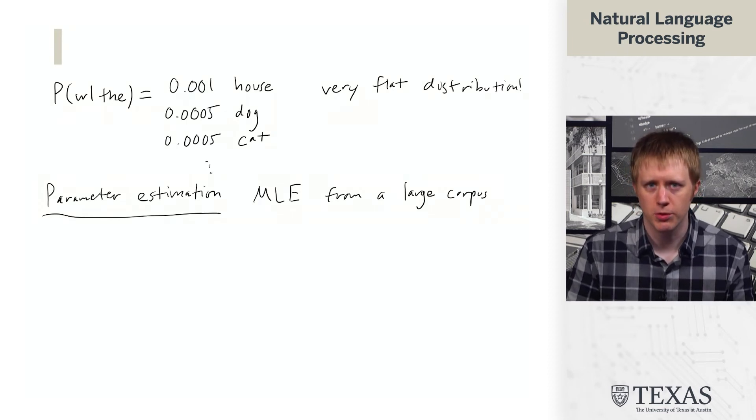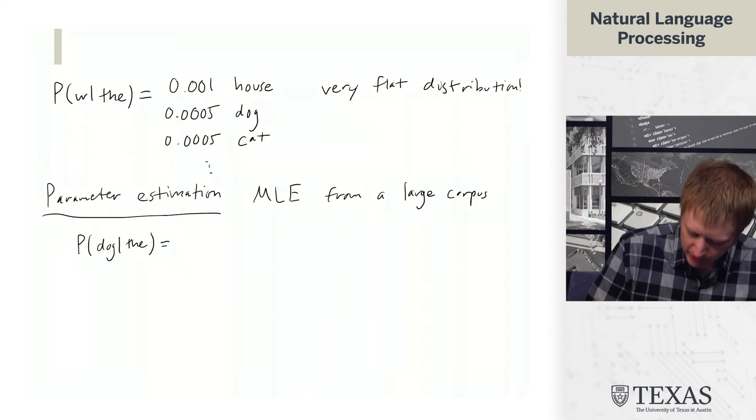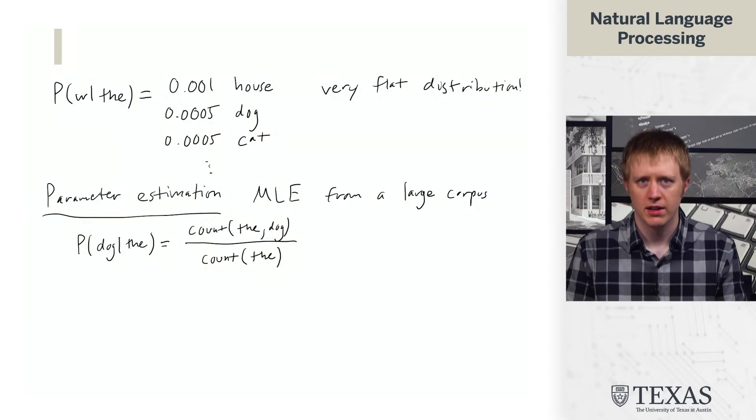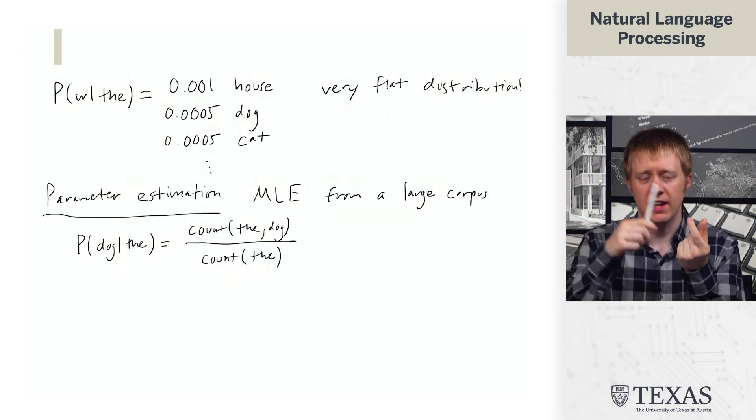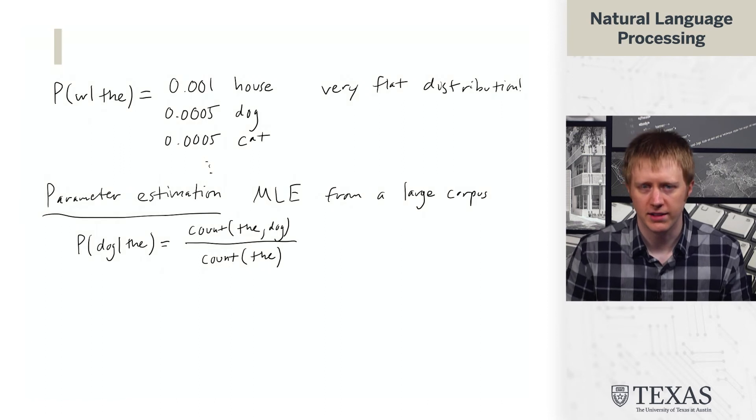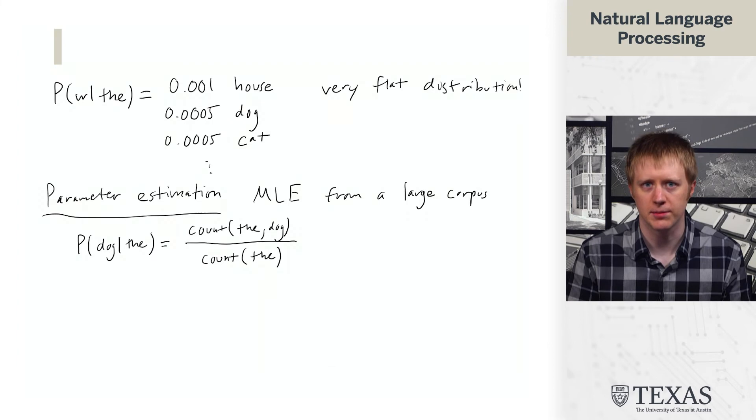So we're going to need to look at smoothing techniques, which we'll do in a future segment. But for right now, we're just going to say that P(dog|the) is going to be defined by count of the dog over count of the in some big corpus. So it's however many times we see the, and then how many times did we see dog continue that. If it came afterwards 10% of the time, then we get this probability being one-tenth, and that's the maximum likelihood estimate here.